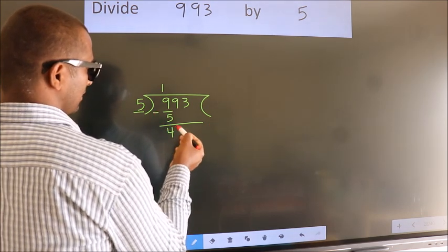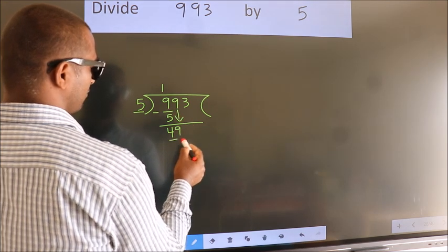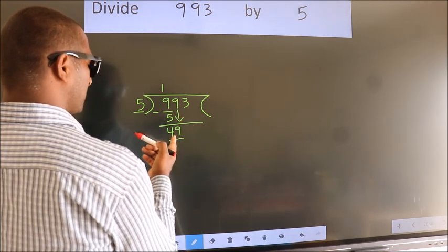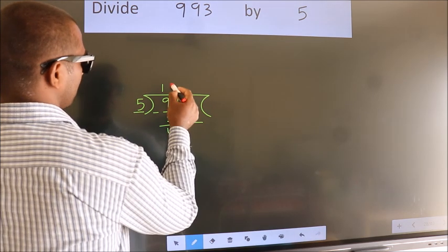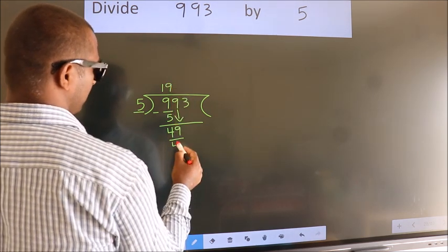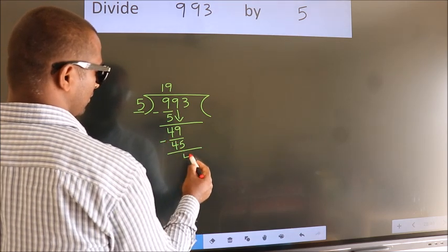After this, bring down the next number. So 9 down, so 49. A number close to 49 in the 5 table is 5 nines 45. Now we subtract. We get 4.